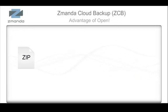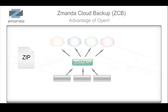Zamanda's philosophy is never to lock up your data in proprietary format or in a proprietary cloud. ZCB uses the well-understood zip format for backup archives. The storage clouds used are accessible through open APIs and tools, so in an emergency, you can download and recover from your archives even without ZCB.